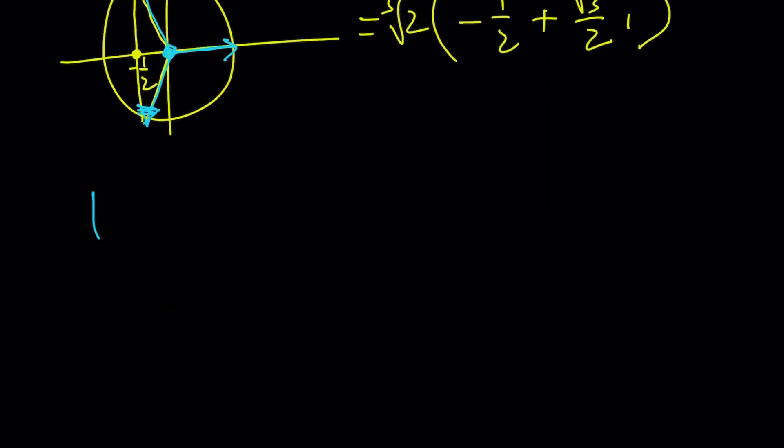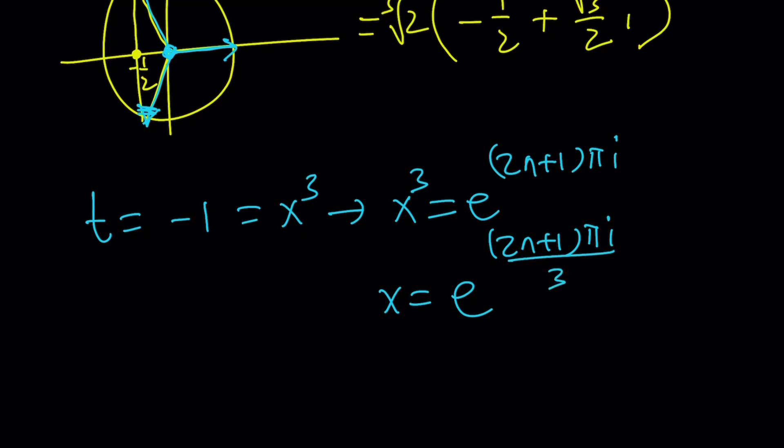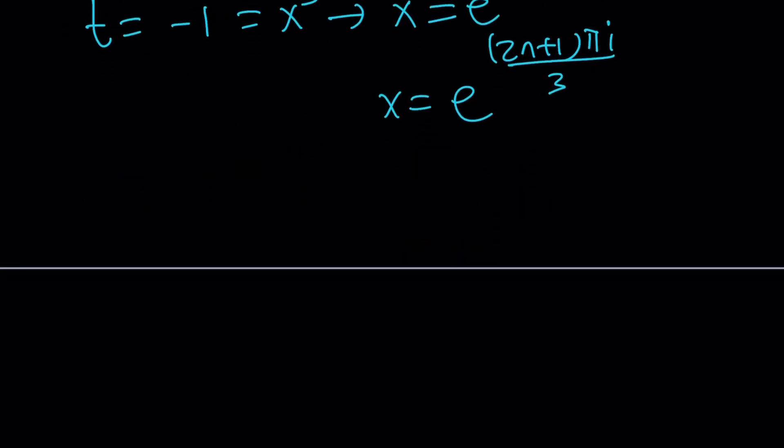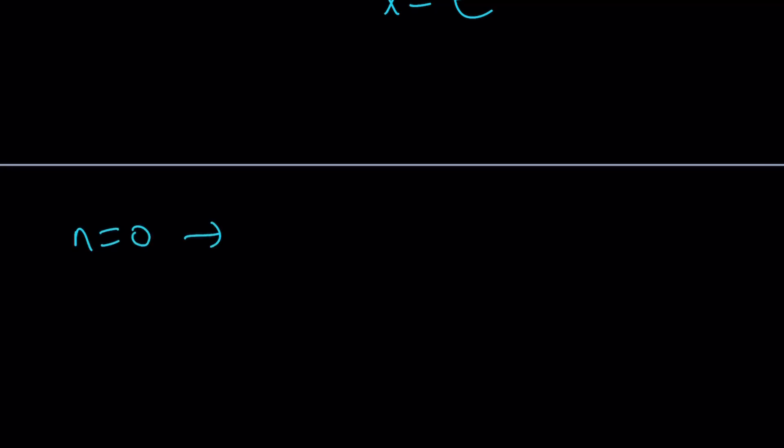Let's go ahead and take a look at the other t value, which is negative 1. This gives you x cubed. Again, we're going to write x cubed as e to the power 2n plus 1 pi i, because that's what it is. If you look at odd multiples of pi, that gives you negative 1. And from here, x becomes e to the power 2n plus 1 times pi i over 3. Make sense? And if you replace n with 0, you get a value. If you replace n with 1, so on and so on. Let's go ahead and do this.